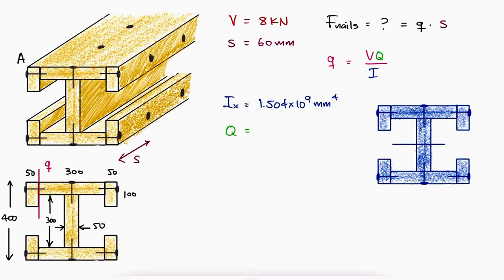That first moment of area would be the area of the shaded region times the distance from the neutral axis to the centroid of that shaded region. And again, just like in example 1, this distance is a vertical distance, not a horizontal one.